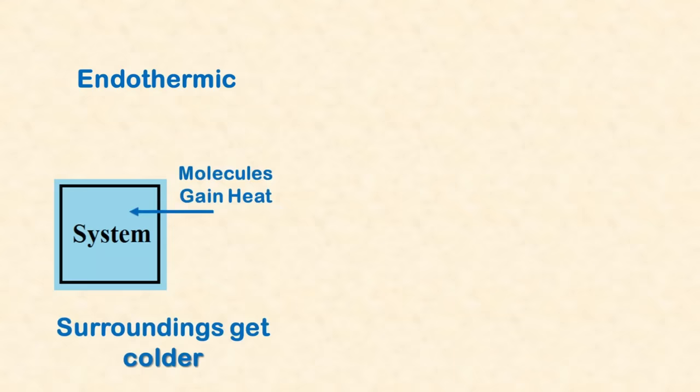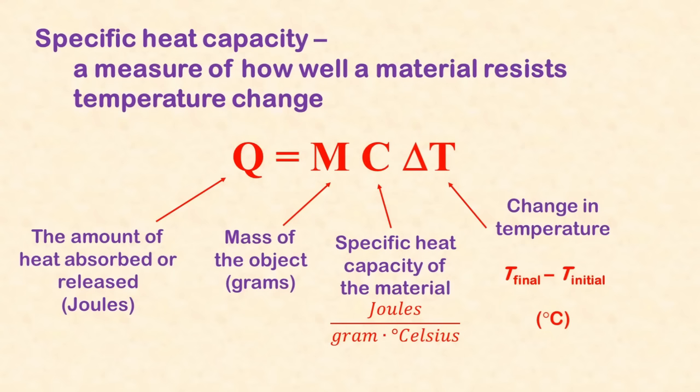Unit 6 covers thermodynamics. Endothermic reactions absorb heat from the surroundings, while exothermic reactions release heat into the surroundings. We calculate heat transfer with the equation Q equals MC delta T. Q represents heat in joules, M is the mass in grams, C is the specific heat capacity of the material, and delta T is the change in temperature.